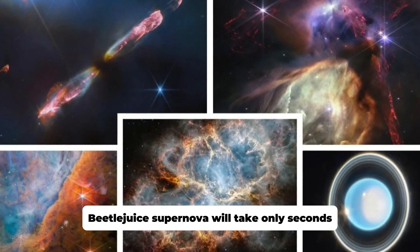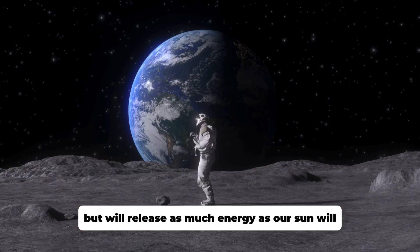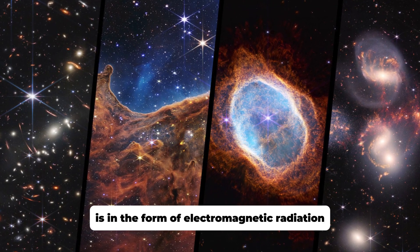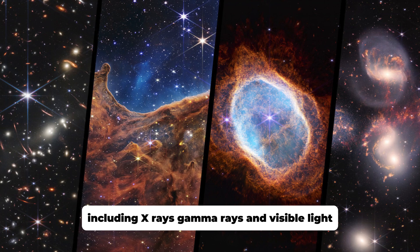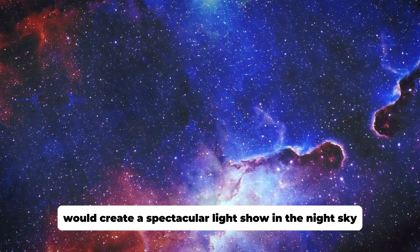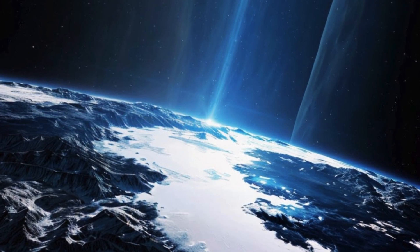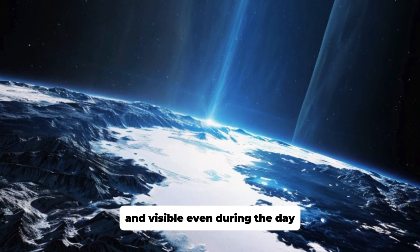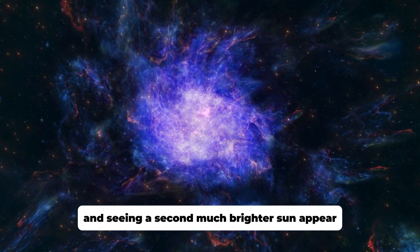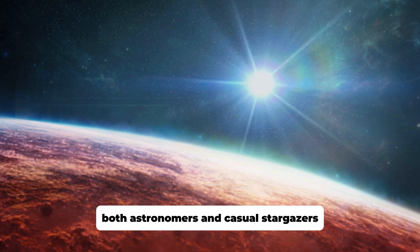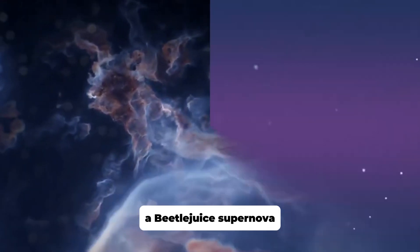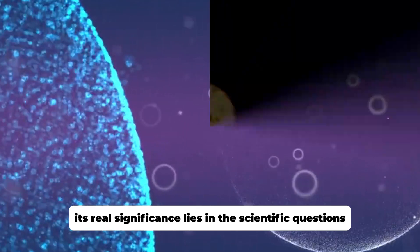Betelgeuse's supernova will take only seconds, but will release as much energy as our Sun will in its entire billions of years of life. Most of the energy released by a supernova is in the form of electromagnetic radiation, including X-rays, gamma rays, and visible light. A Betelgeuse supernova, however, would create a spectacular light show in the night sky that we could see immediately. For a brief period, the explosion would be brighter than the Moon and visible even during the day. Imagine looking up at the sky during the day and seeing a second, much brighter sun appear for weeks or even months. Both astronomers and casual stargazers would be captivated by the event.